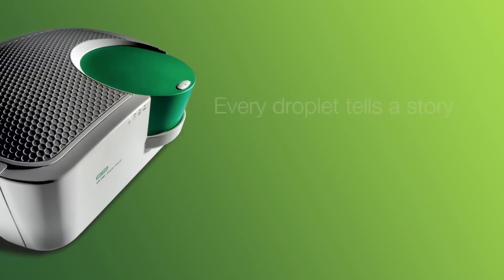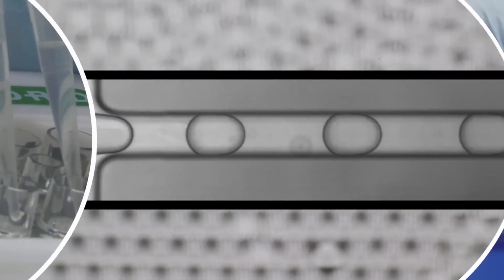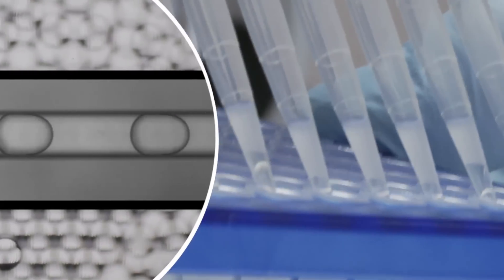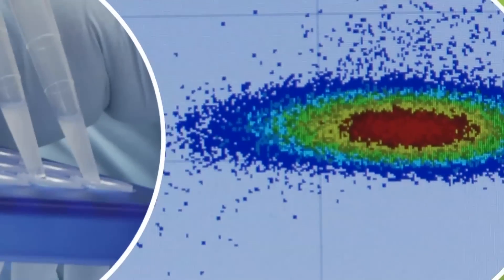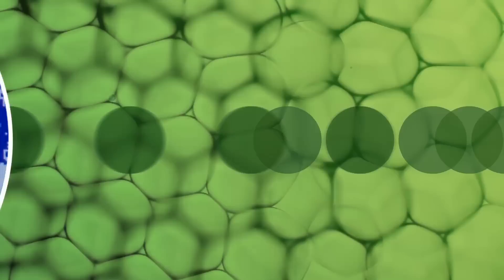Droplet Digital PCR is a new technology for measuring target DNA concentration with incredible precision and sensitivity. By partitioning samples into thousands or up to millions of uniform droplets, Droplet Digital PCR helps researchers measure what they could not measure before.